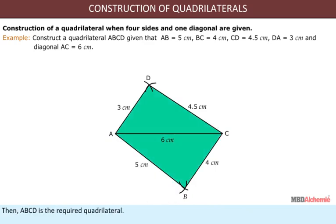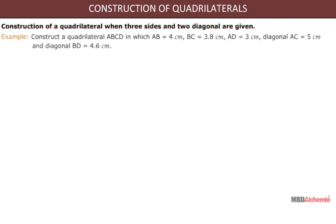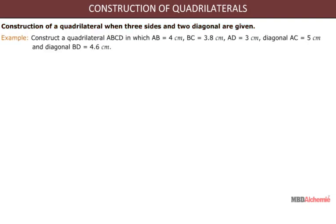Construction of a quadrilateral when three sides and two diagonals are given. Example: Construct a quadrilateral ABCD in which AB = 4 cm, BC = 3.8 cm, diagonal AC = 5 cm, and diagonal BD = 4.6 cm.